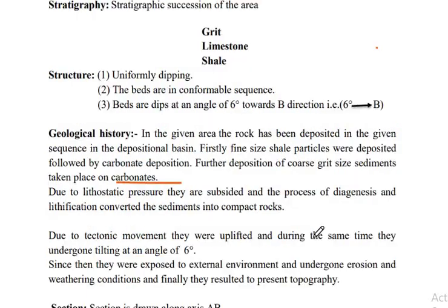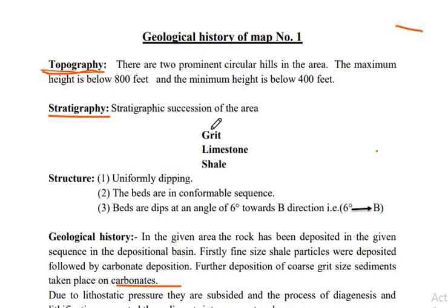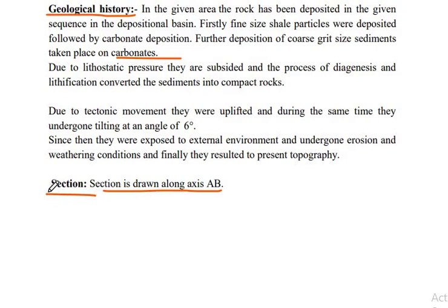So, to summarize how we write the geological history of a map: first is topography, second is stratigraphy, third is structure, fourth is the geological history, and the section along which axis is prepared. We can write in the same way for map number two and map number three as well.